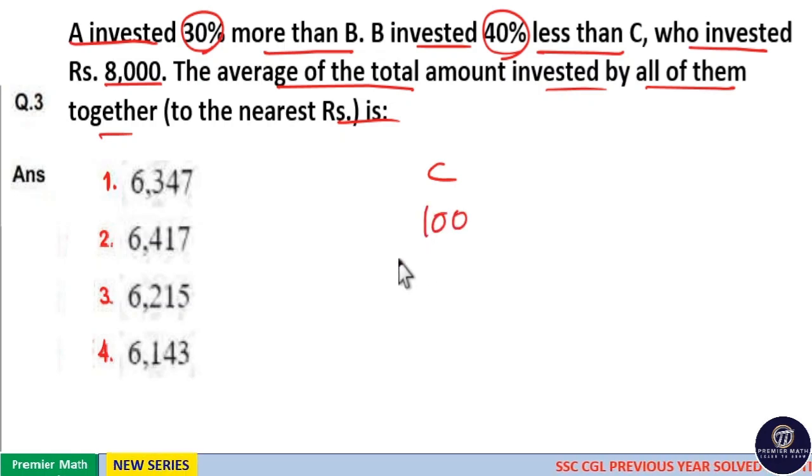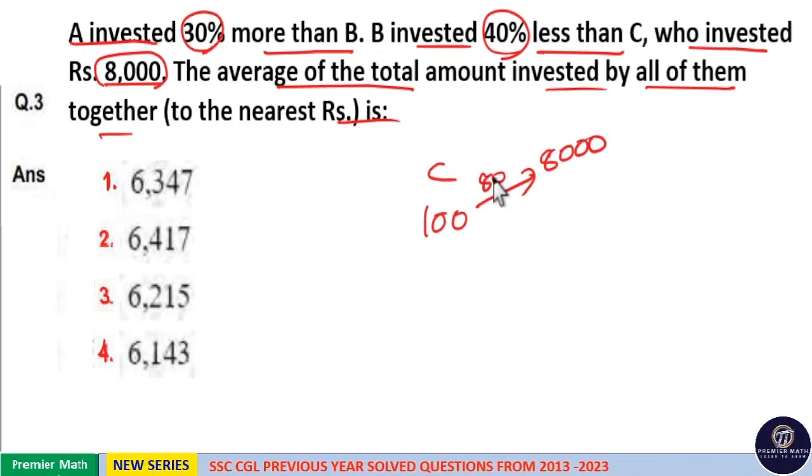Consider C invested 100 rupees. But here it is given as 8,000. That is, this 100 part is equal to 8,000, means 1 part is equal to 8,000 divided by 100, which is 80. So 1 part is 80.